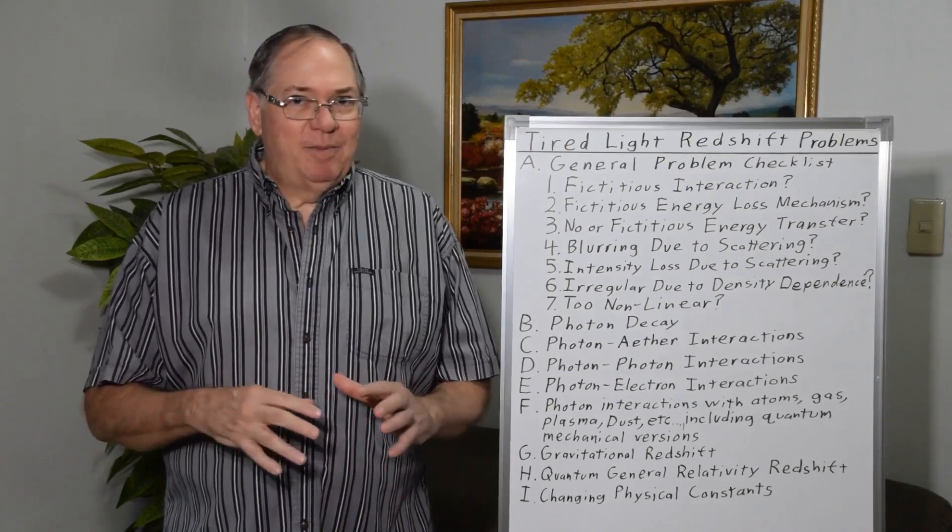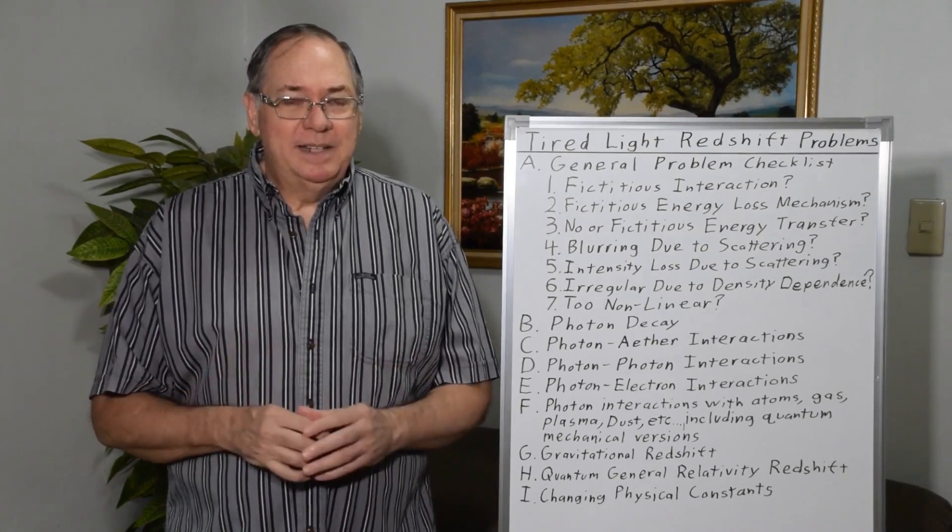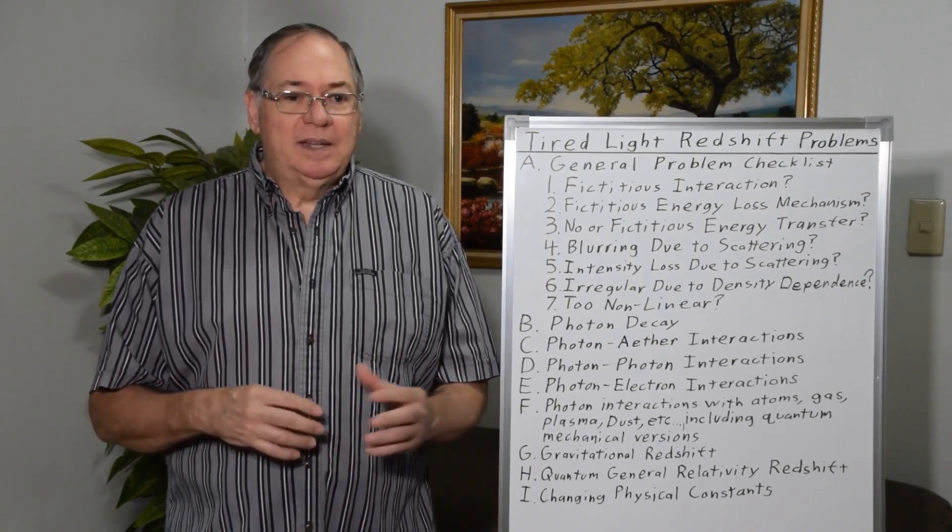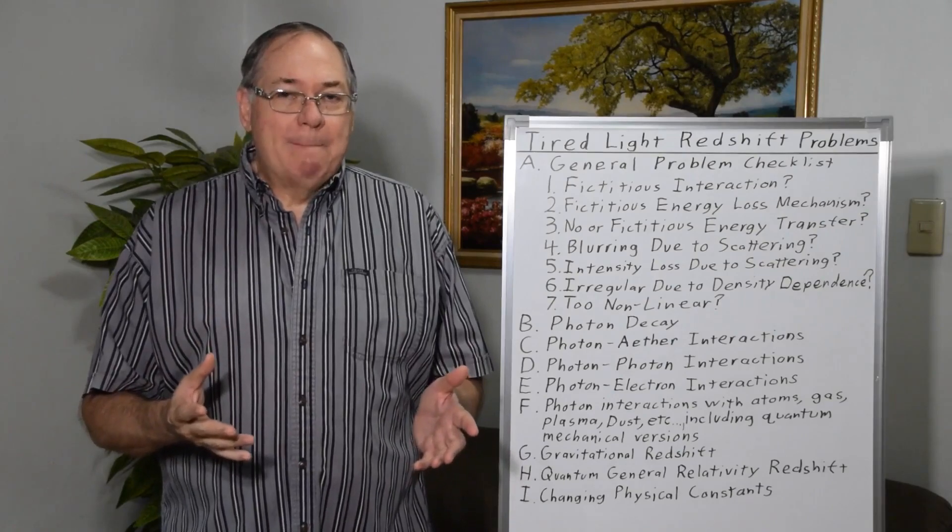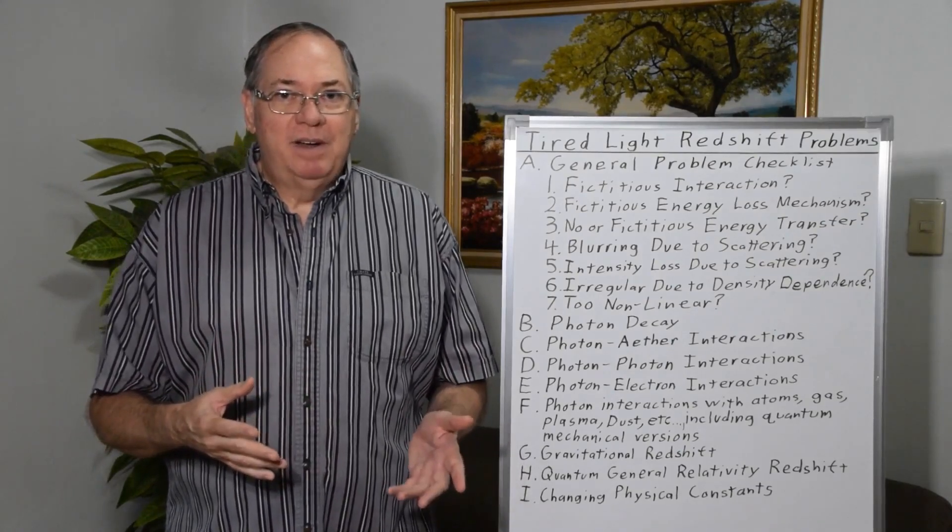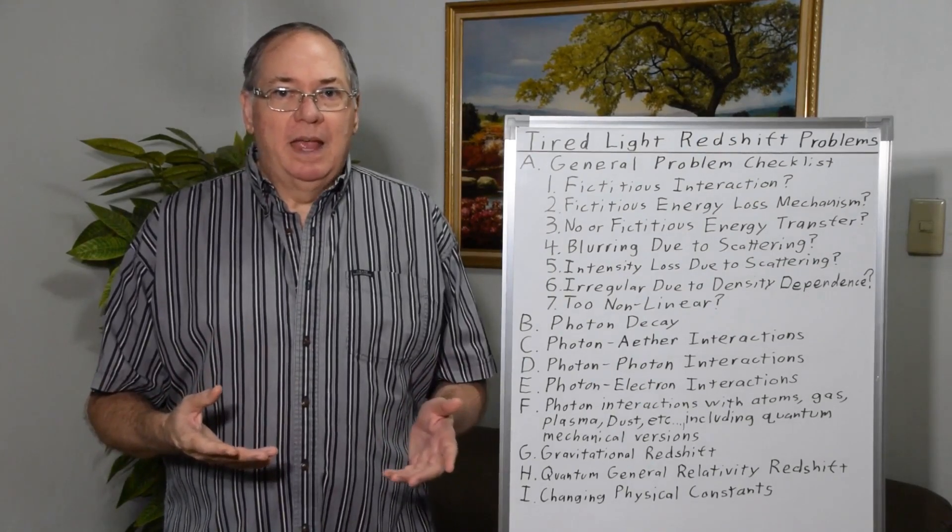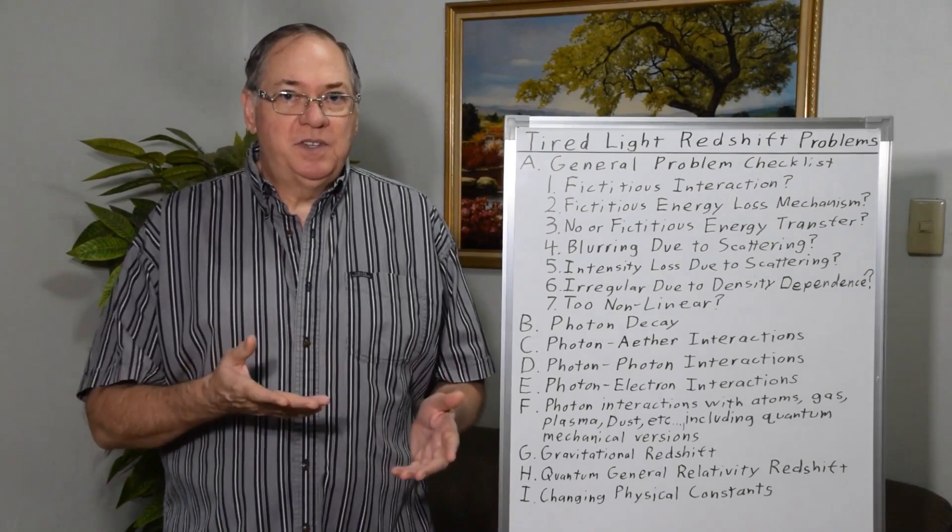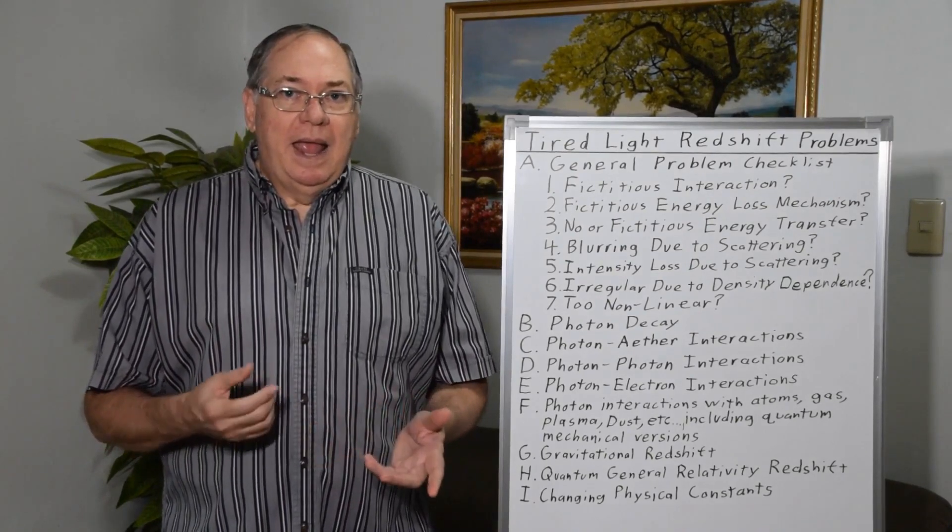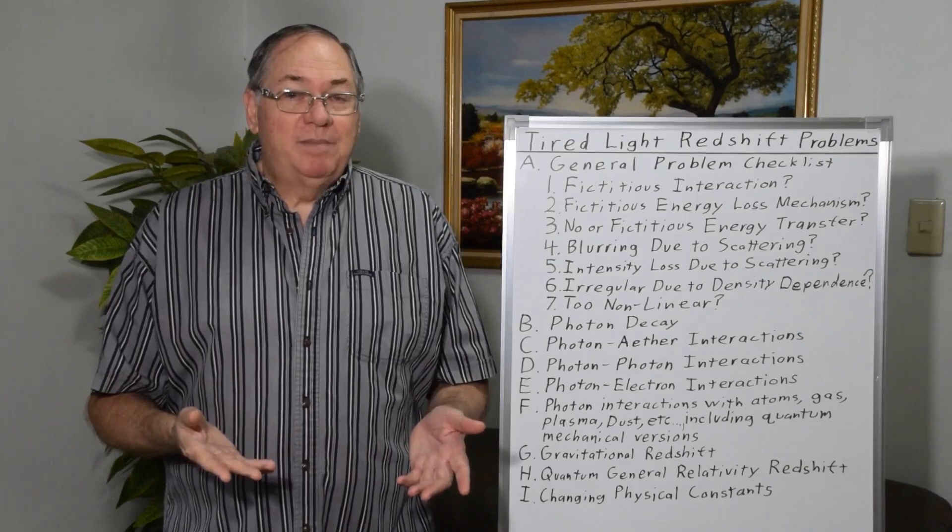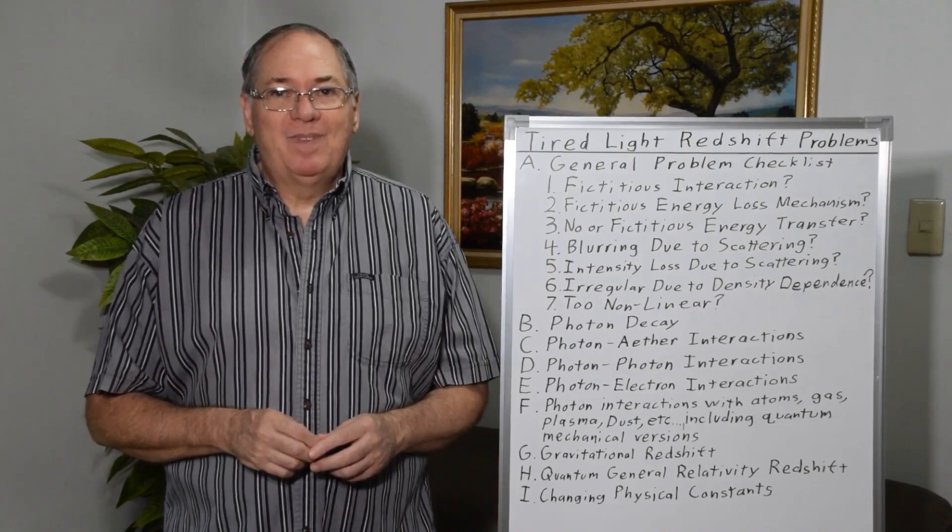And then beyond this, there are lots of models, some of which are going to be crackpot theories and shouldn't be taken seriously at all. So as I said, when you go through a list of the probably 100 plus different models for tired light redshift that have been proposed, most of them are going to be garbage. And it should be pretty obvious if you use this checklist and some of the other ideas I presented that they are garbage. And so the key is how do we find the right one? And as I said, I'll talk about the idea that I like in my next video.